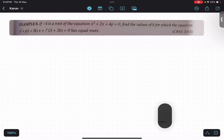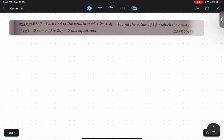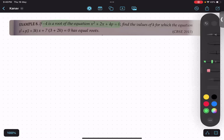So when they are giving us one thing, minus 4 is a root of this. What does this mean? That the answer will come 0. What is minus 4? Minus 4 is x value.